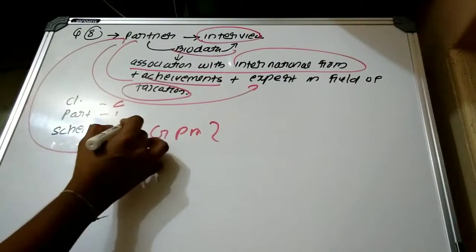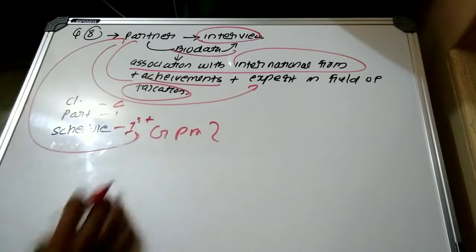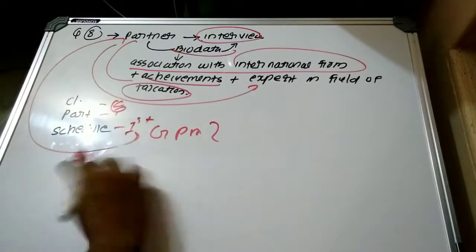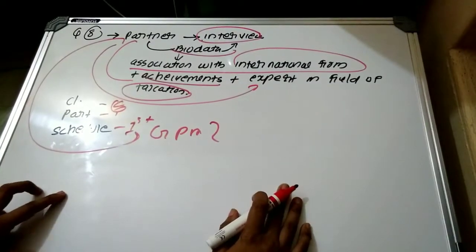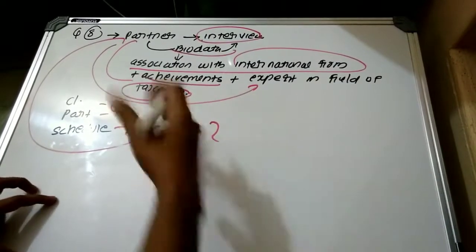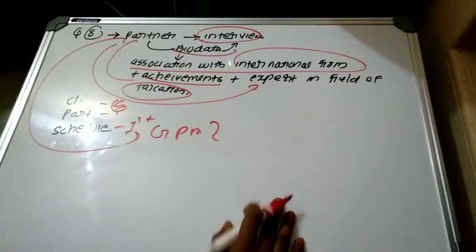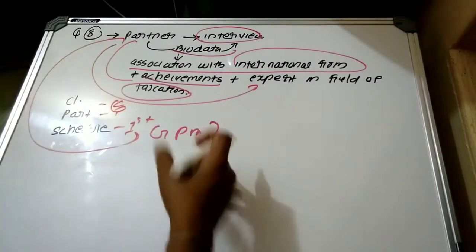Clause 6, Part 1, Schedule 1 provides that a CA in practice shall be deemed to be guilty of professional misconduct if he solicits professional work or client either directly or indirectly.